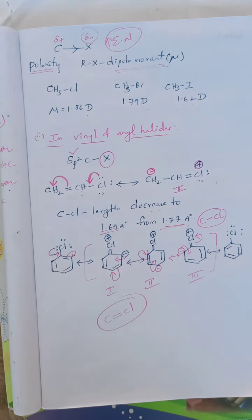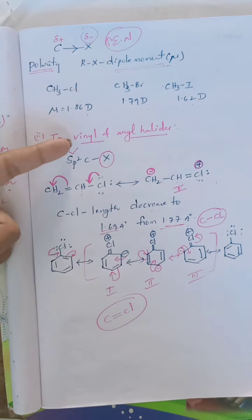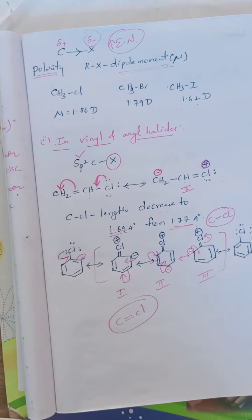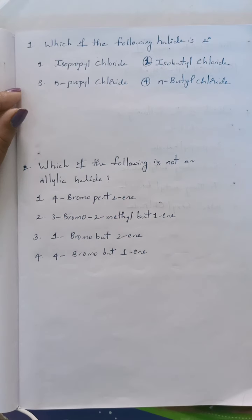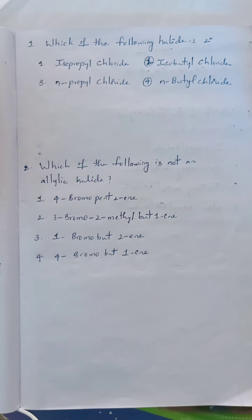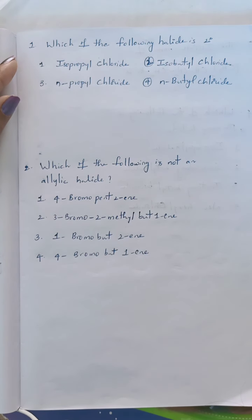That is about the nature of the carbon-halogen bond in alkyl halides, vinyl halides, and aryl halides. Now we will see a few questions related to the IUPAC system and classification of haloalkanes and haloarenes.